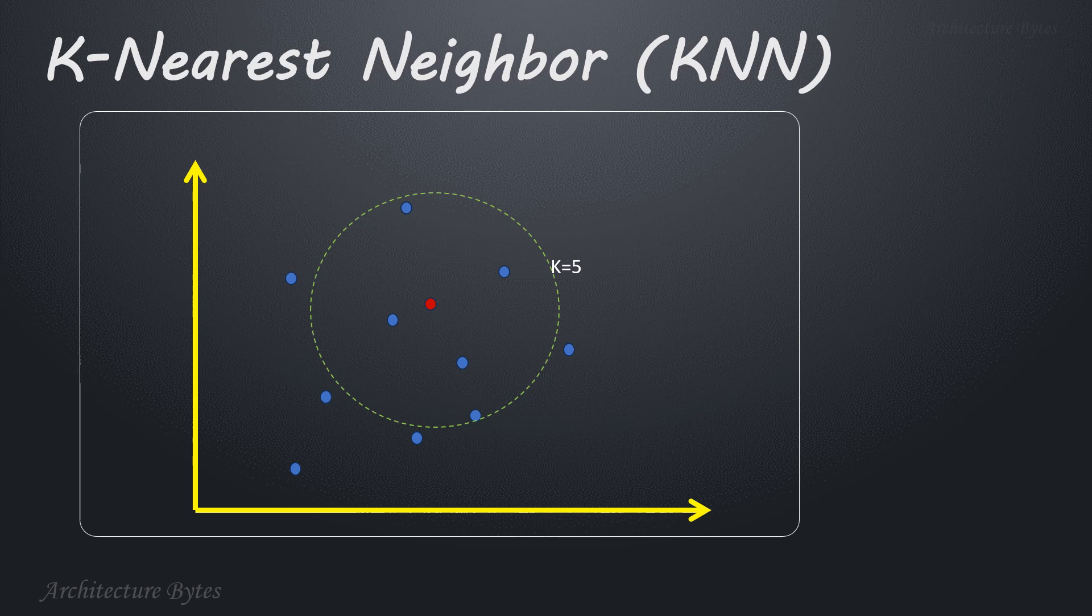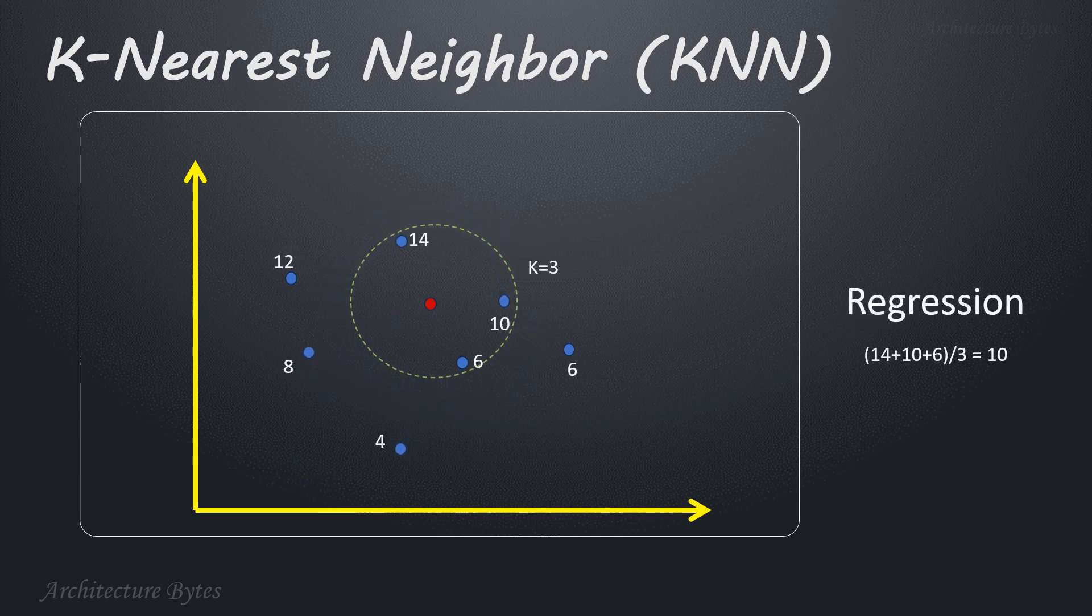Here's an example where value of k is 5. So in this example the new data point in red is likely a fish because that's the majority among five nearest neighbors. And here's a regression example: the value of new data point for k value 3 is average of three nearest neighbors. So that is average of 14, 10, and 6, which is 10.